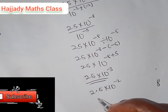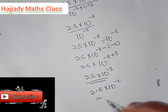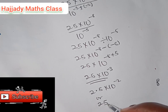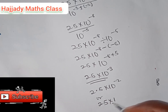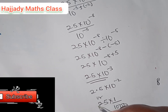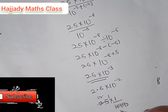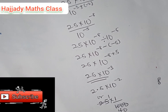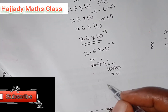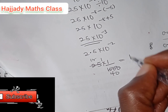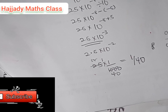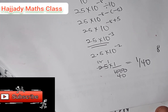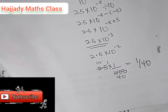We can also have 25 times 10 raised to the power minus 2. Note that 10 raised to the power minus 3 is the same as 1 over 1000, so 25 over 1000 gives 0.025, which simplifies to 1 over 40. Finally, since we are simplifying, we can have it as 1 over 40. Thank you very much and please kindly subscribe to our channel. See you in the next video.